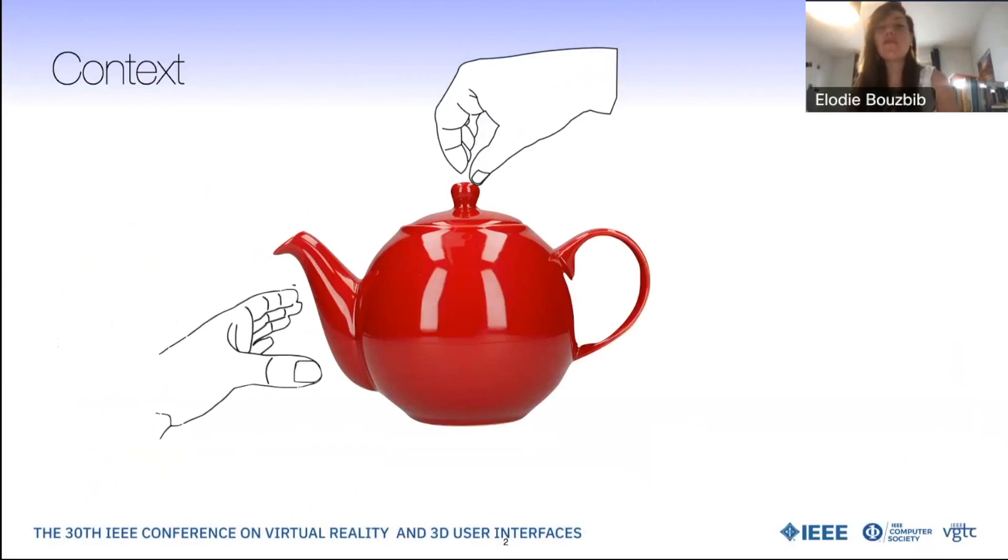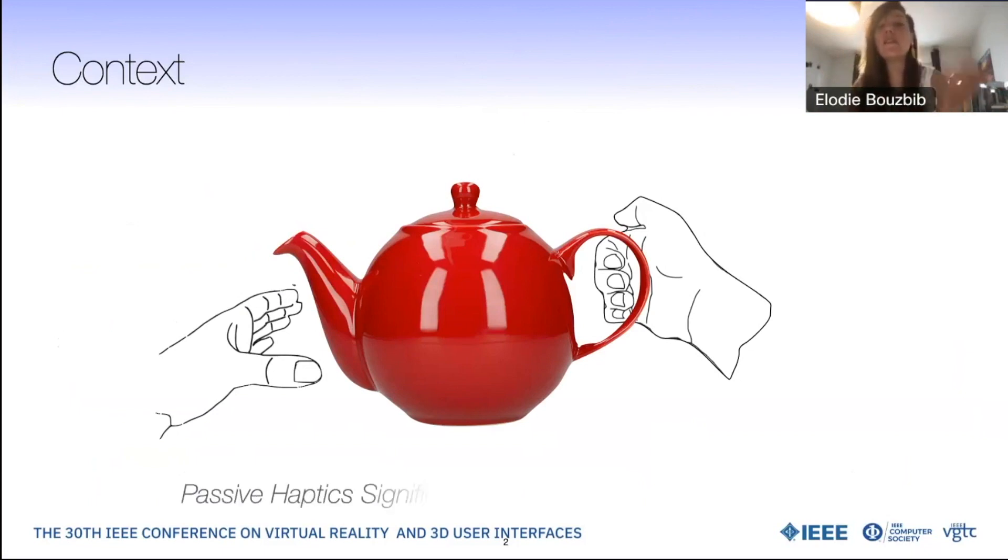In real life, whenever we want to interact, it is usually done through our bare hands, which make us perceive affordances and the inherent haptic properties of the object we are manipulating. In VR, haptics, our sense of touch, can provide this control and engagement. The more resemblance from the haptic properties, the more believable the experience. In this regard, obviously real objects, also called passive haptics, work as a charm and are shown to significantly enhance the virtual environments.